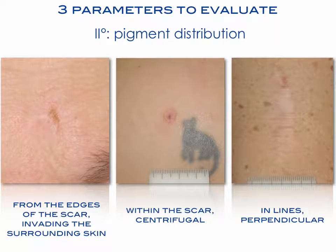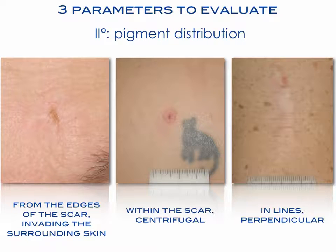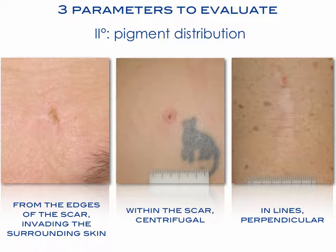Secondly, we have to evaluate the pigment distribution clinically. In melanoma, we have the distribution of the pigmentation from the edges of the scar invading the surrounding skin. In recurrent nevus, usually the pigmentation is within the scar with a centrifugal distribution. In melanotic reactive pigmentation, we have pigmentation in lines perpendicular to the scar.